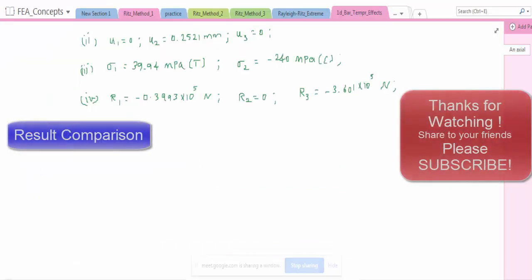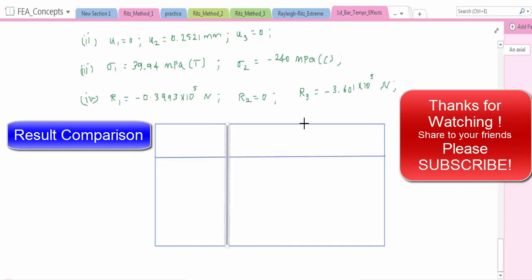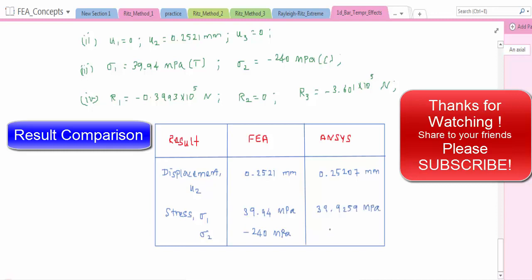So now we will do the result comparison in a table. In FEA method, that is in theory, FEA theory and in ANSYS, the result is displacement first quantity is displacement U2. 0.2521 mm is in FEA, 0.25207 mm in ANSYS. Stress in element 1: in FEA we got it 39.94 MPa. In ANSYS, sigma 2 -240, 39.9259 in ANSYS and -240.049 MPa in ANSYS.